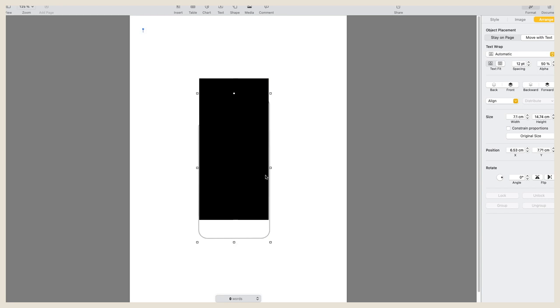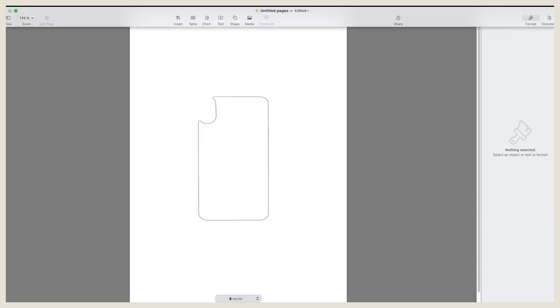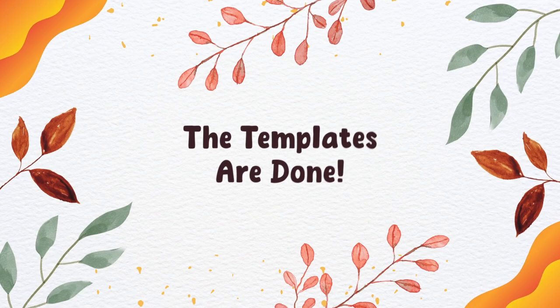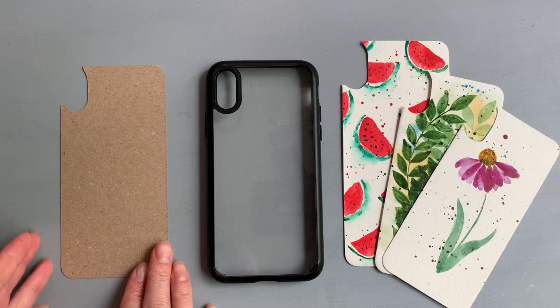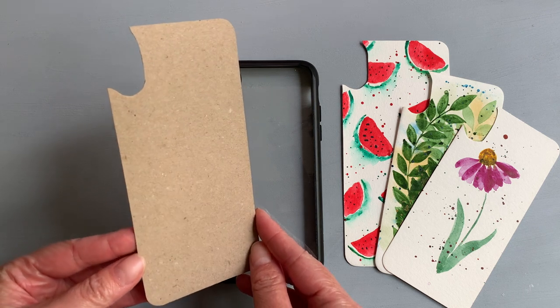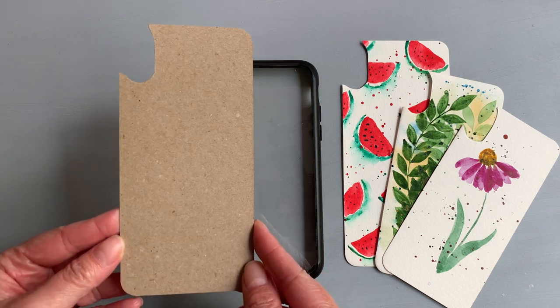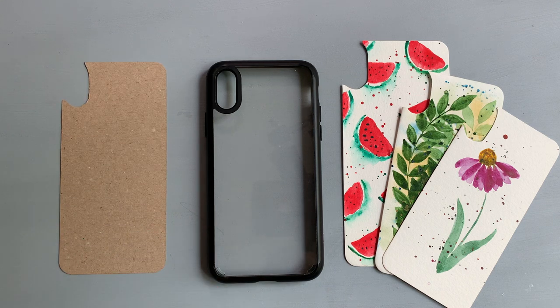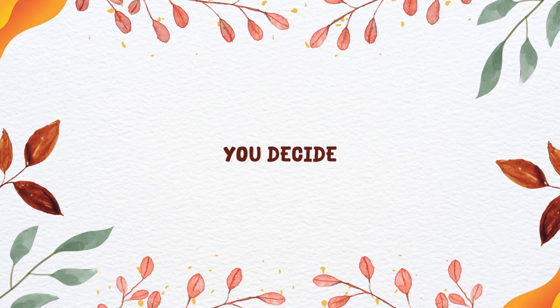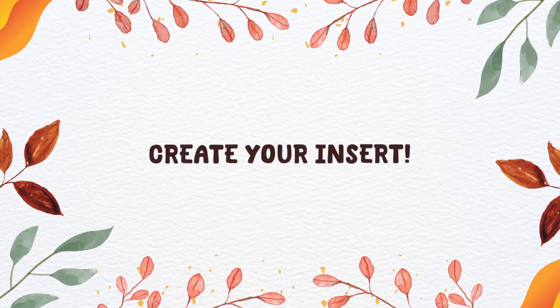Once you are done, delete the rectangle, print it out, cut it out, and there is your template. That's how you make a template for the insert. If you would like a more durable template, you can always create it afterwards using the printer paper template. But I just use the actual insert I previously created as my template for the next one. Whatever you decide to do, now you are ready to create your insert.